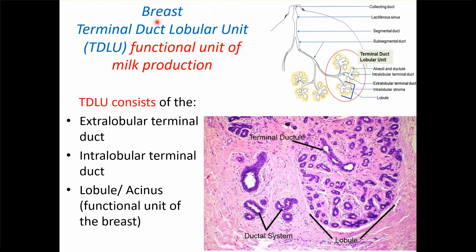Now coming to breast. Very important is the TDLU — Terminal Duct Lobular Unit — which is the functional unit of milk production. It consists of a lobule with an intralobular terminal duct and an extralobular terminal duct. Together these form the TDLU. If a duct is inside the lobule it is called intralobular terminal duct; if outside, extralobular terminal duct. Pathologically, any changes here are important for identifying cancer.